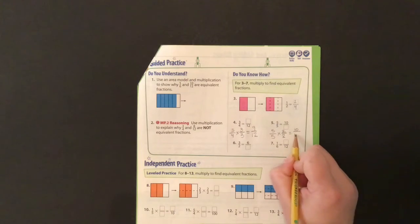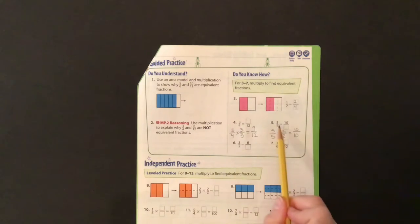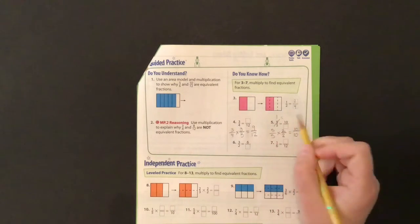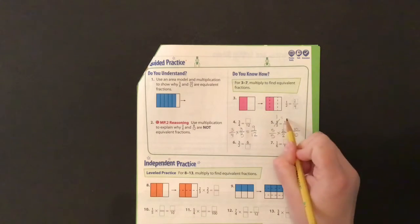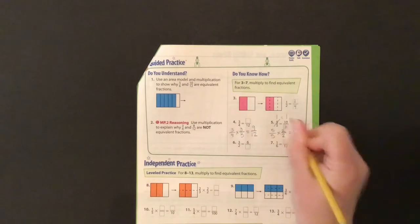And we will get 10 tenths. Now just by looking at 5 fifths, we know 5 fifths is equal to a whole. So whatever we put on the bottom, this would also have to be equal to a whole. And so 10 tenths is equal to a whole.